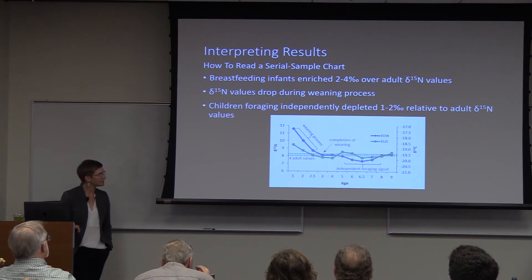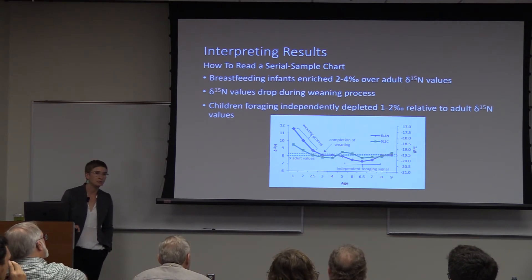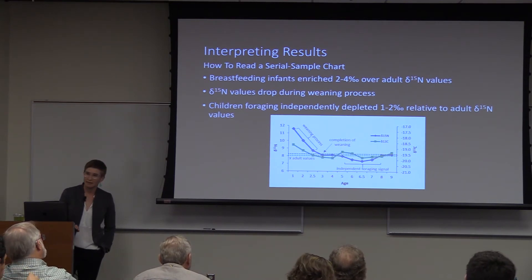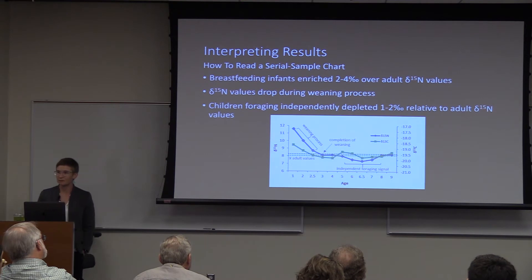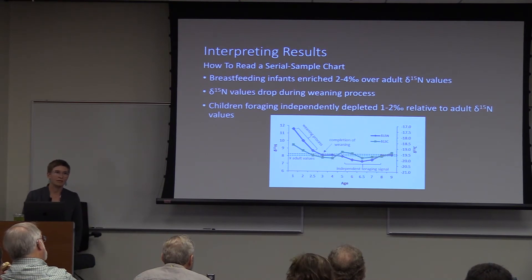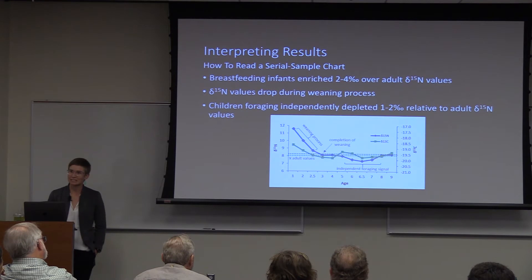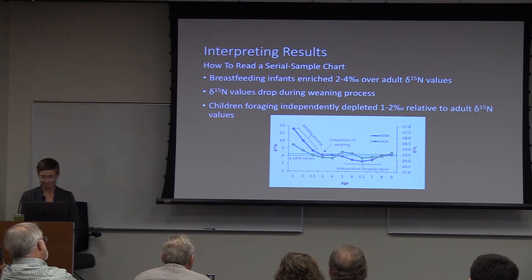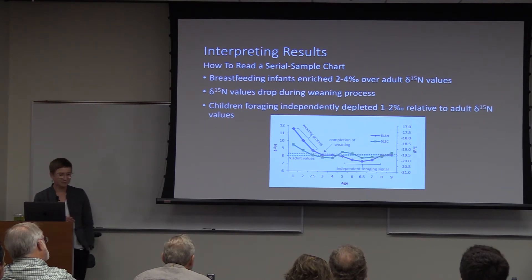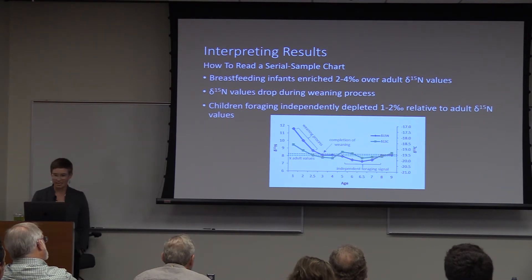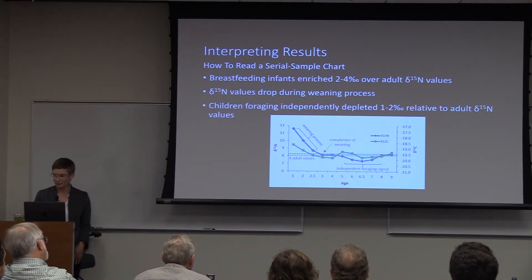Typically, infants and young children will be consuming diets pretty similar to those of adults. However, this can vary later in childhood as some children begin supplementing provision food with foods they forage themselves — and because most often they're less effective foragers than adults, their diet looks a bit different. But I'm only going to be focused on weaning at this point; this is just to give you a preview of what all this can do.